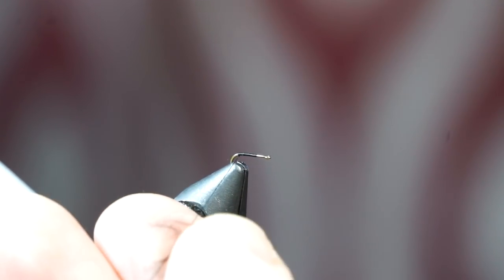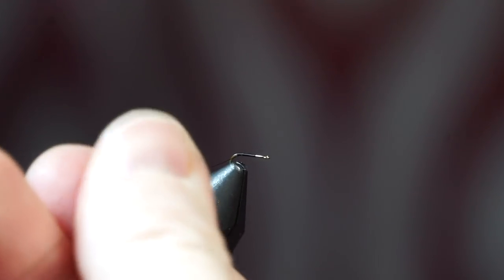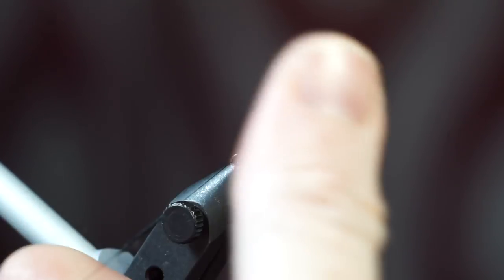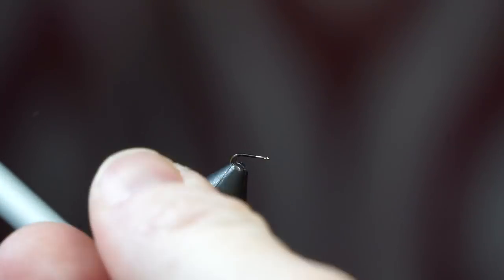Pull a small amount of superfine dubbing in black and then dub it onto your thread, but make sure it's spread out along the thread and dub it very tightly.